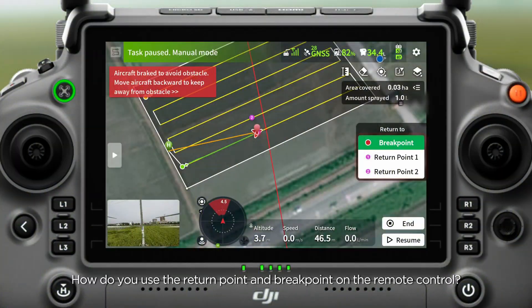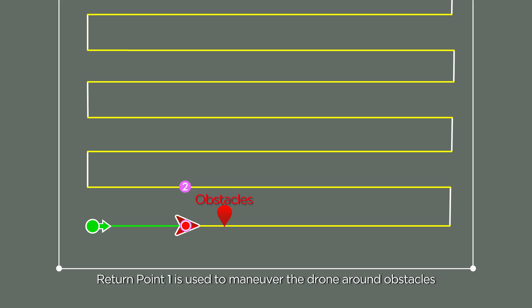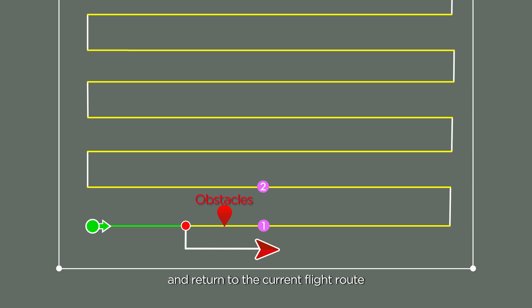How do you use the return point and break point on the remote control? Return point 1 is used to maneuver the drone around obstacles and return to the current flight route.